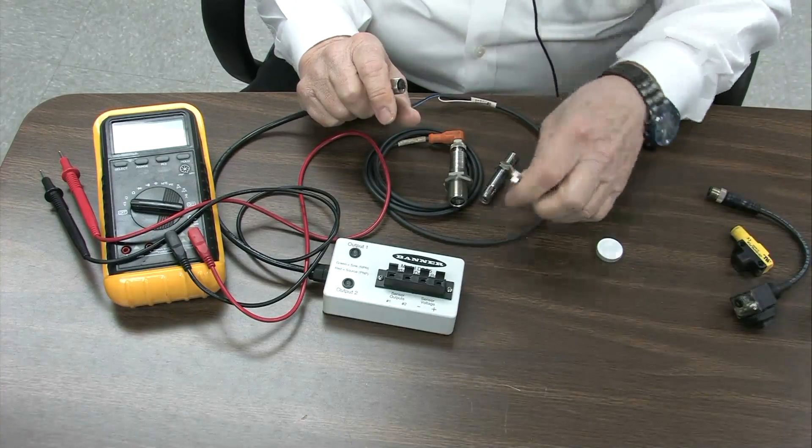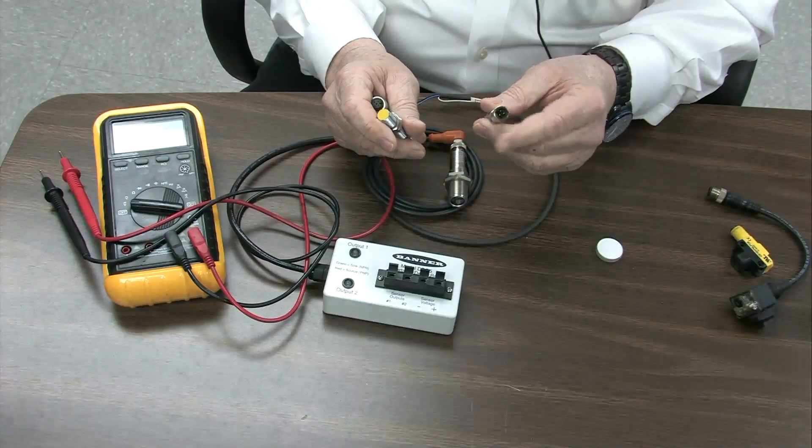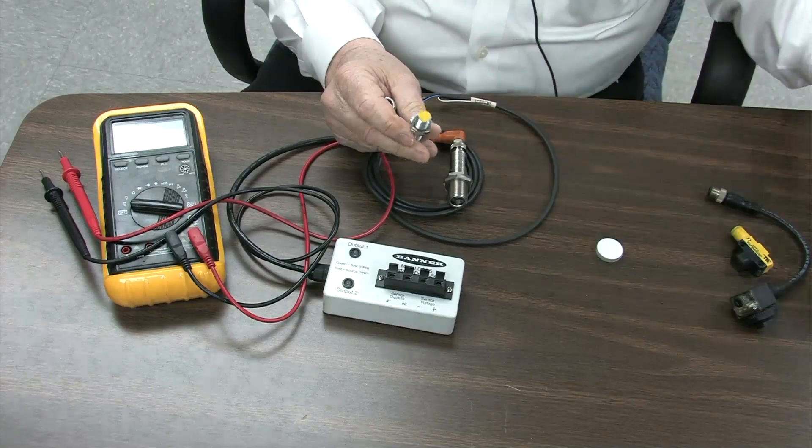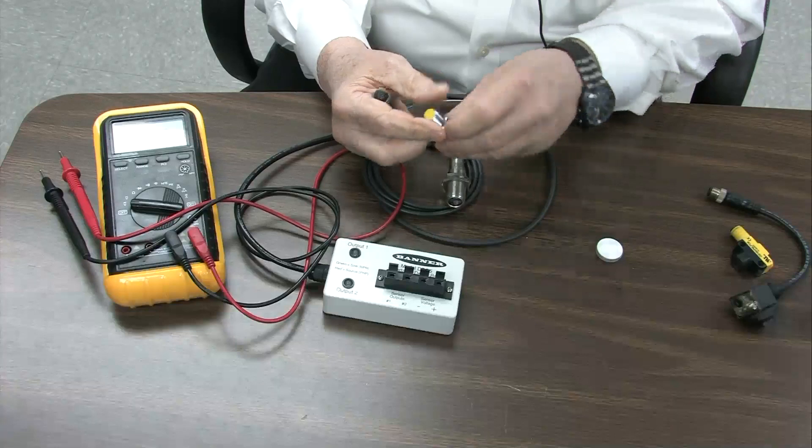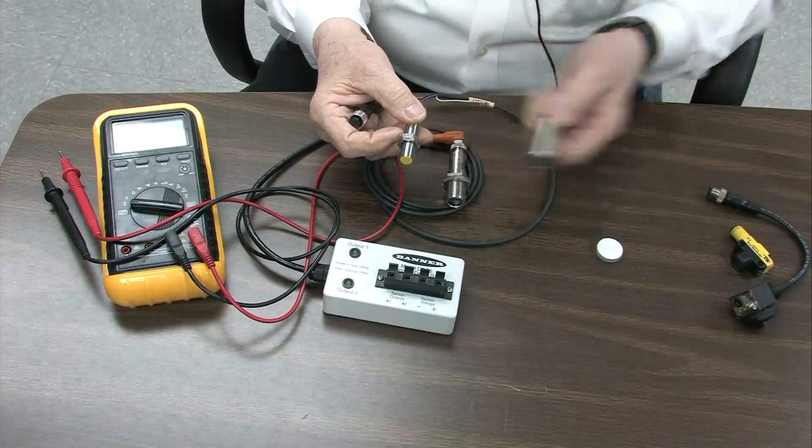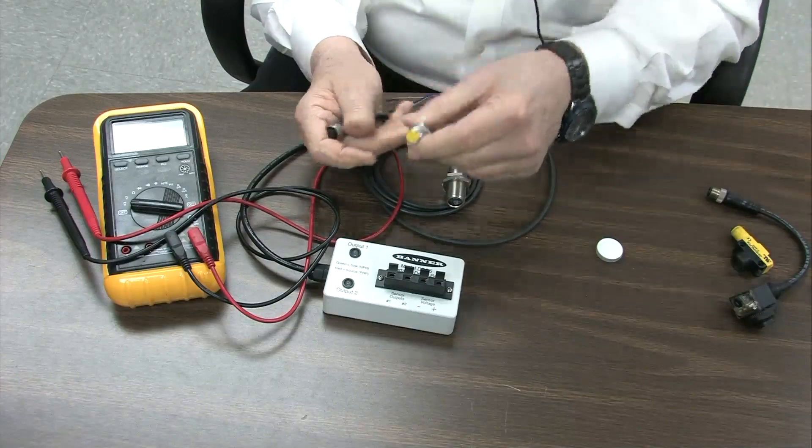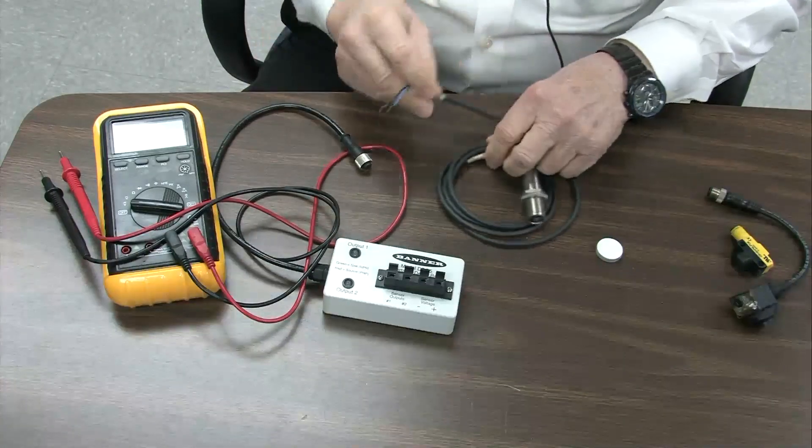We have other, I have other devices down here. This one happens to have three pins, which means it's an AC device. This device might look like a photo sensor because it's similar to this one. This is a photo sensor. This is a proximity detector. We're not looking at proxies today.